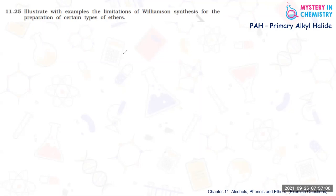Question number 11.25. Illustrate with examples the limitations of Williamson synthesis for the preparation of certain types of ethers.